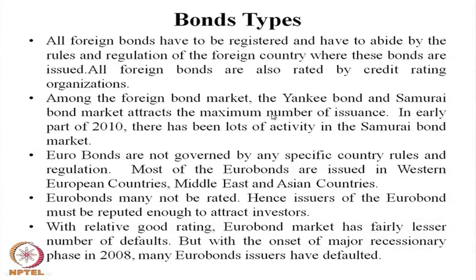Among the foreign bond markets, Yankee bonds and Samurai bonds attract the maximum number of issuances. In the early part of 2010, there was a lot of activity in the Samurai bond market because Samurai bonds offer one of the lowest coupon rates available in the market. Many companies were issuing Samurai bonds to benefit from the lowest possible coupon rate. Yankee and Samurai bonds remain the most popularly issued and traded bonds in the international market.